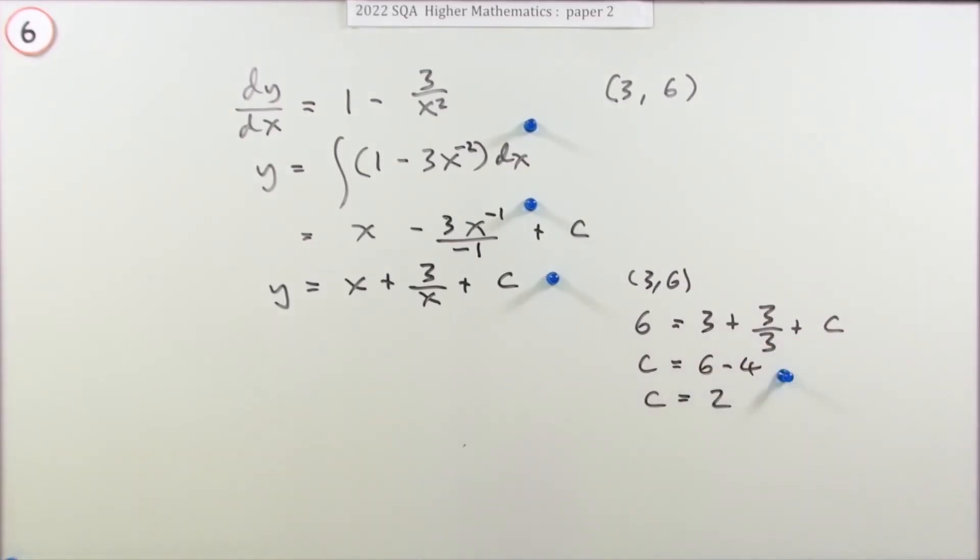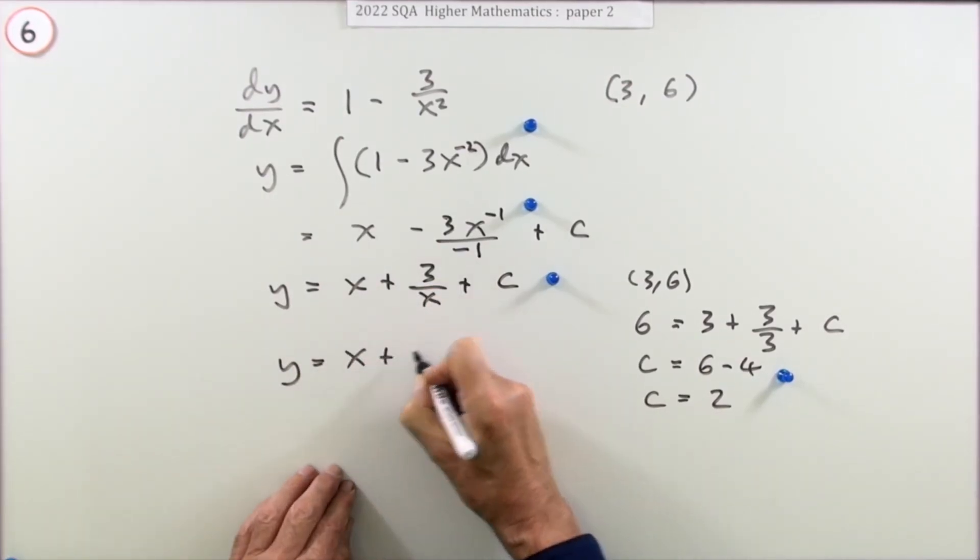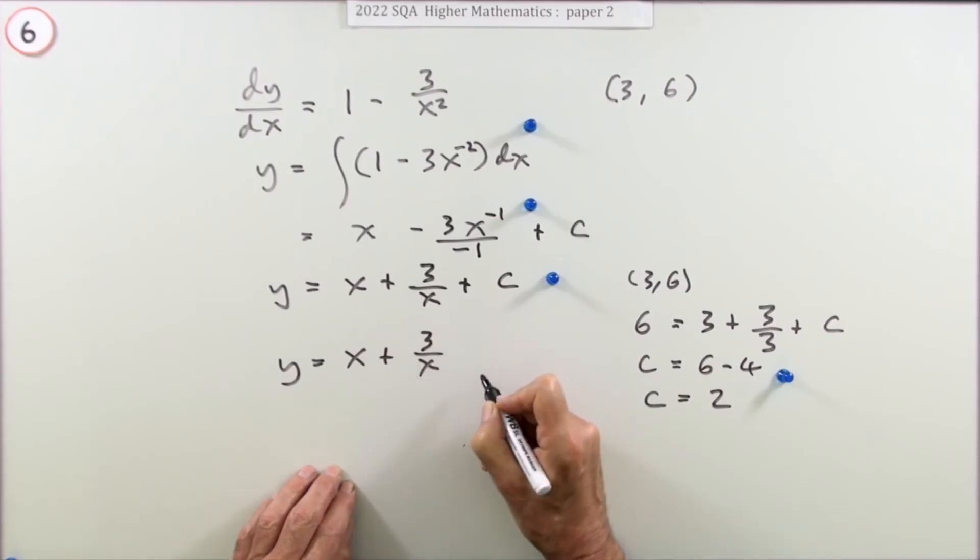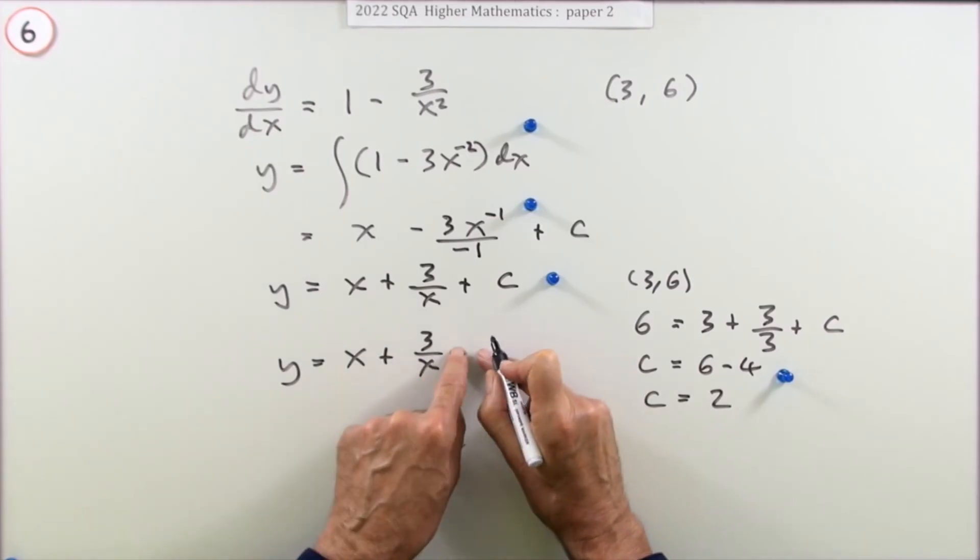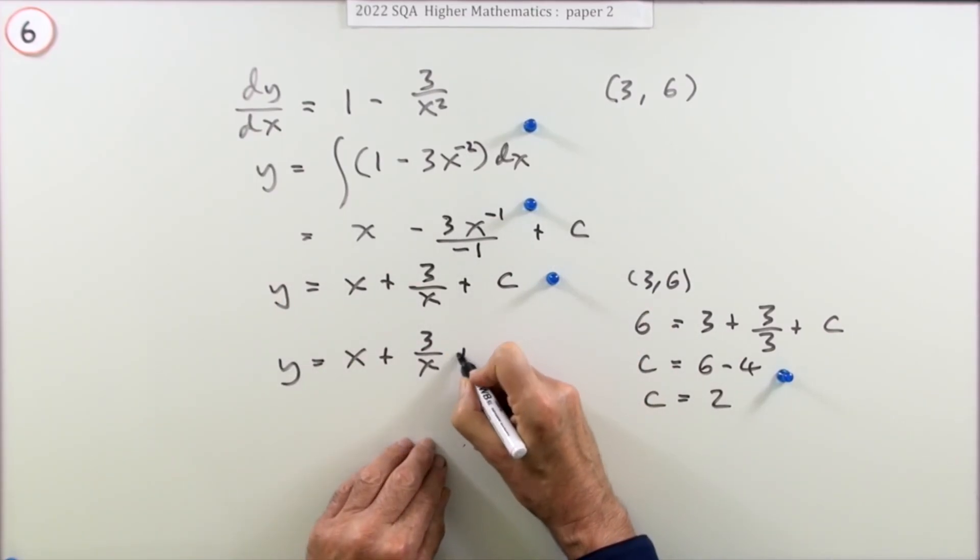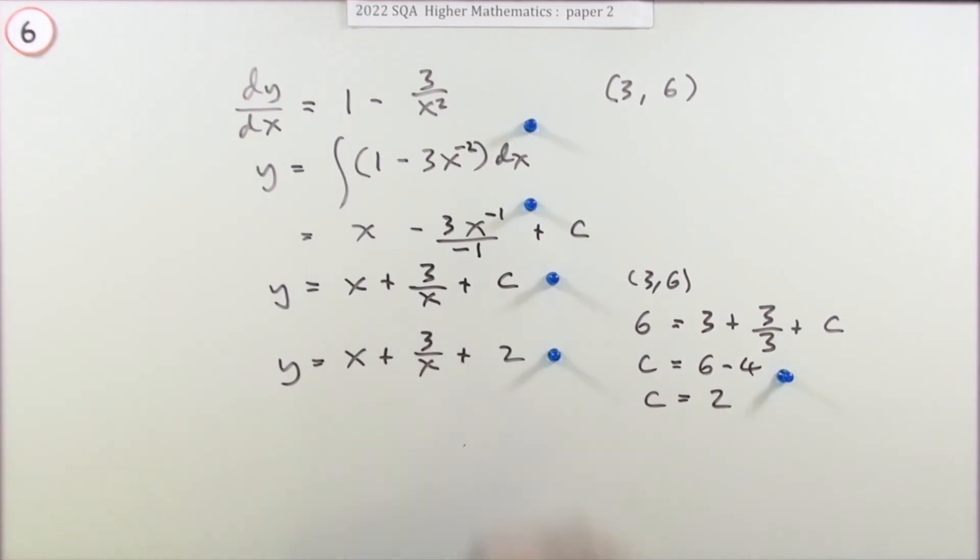So, substituting that in to find the c is a mark. And the final mark's just for finishing it off. So, it must have been x plus 3 over x. They let you off with x to the negative 1. Plus 2. There we go.